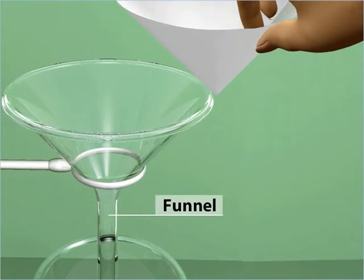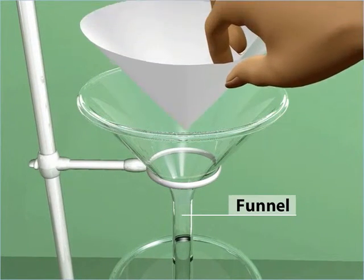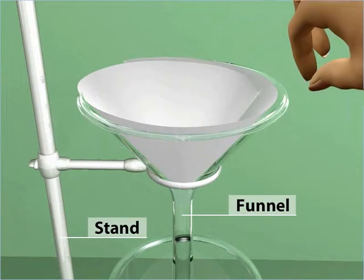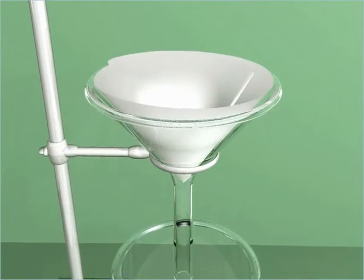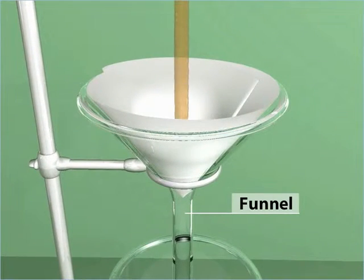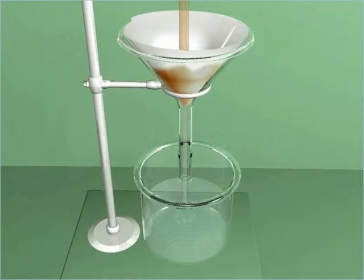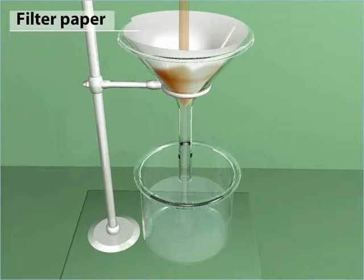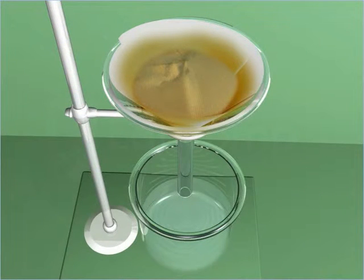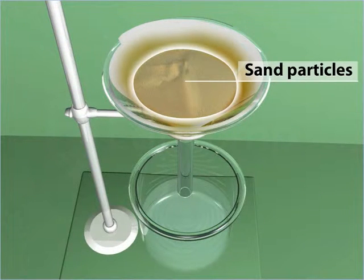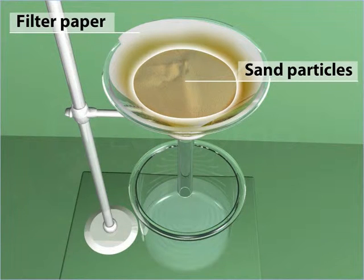Now fix this cone-shaped filter paper onto a funnel which is already fixed on a stand. Keep a beaker below the funnel, and then pour the mixture of sand and water into the funnel. You will observe that the water will pass through the filter paper and will be collected in the beaker. On the other hand, sand particles which are bigger than the pores of the filter paper will be retained on the filter paper. In this way the mixture is separated.